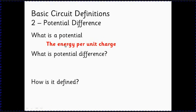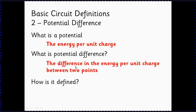So potential difference is simply the difference in the energy per unit charge between two points. So although sometimes we talk about the potential at one point, we can't really measure that. What we can measure is the potential difference between two points.